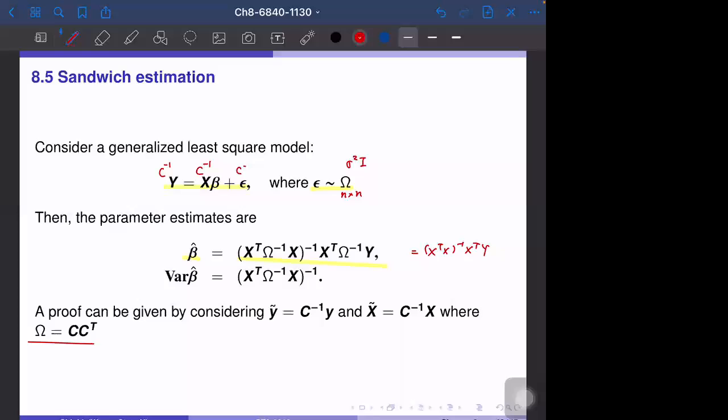Then c inverse epsilon follows the standard identity matrix i, and we can apply the usual least square method to get beta hat. We can also derive the variance of beta hat in the same way, which is x transposed omega inverse x inverse. This equals sigma square times x transposed x inverse for the special case that omega equals sigma square i. So this is an extension of the least square method.